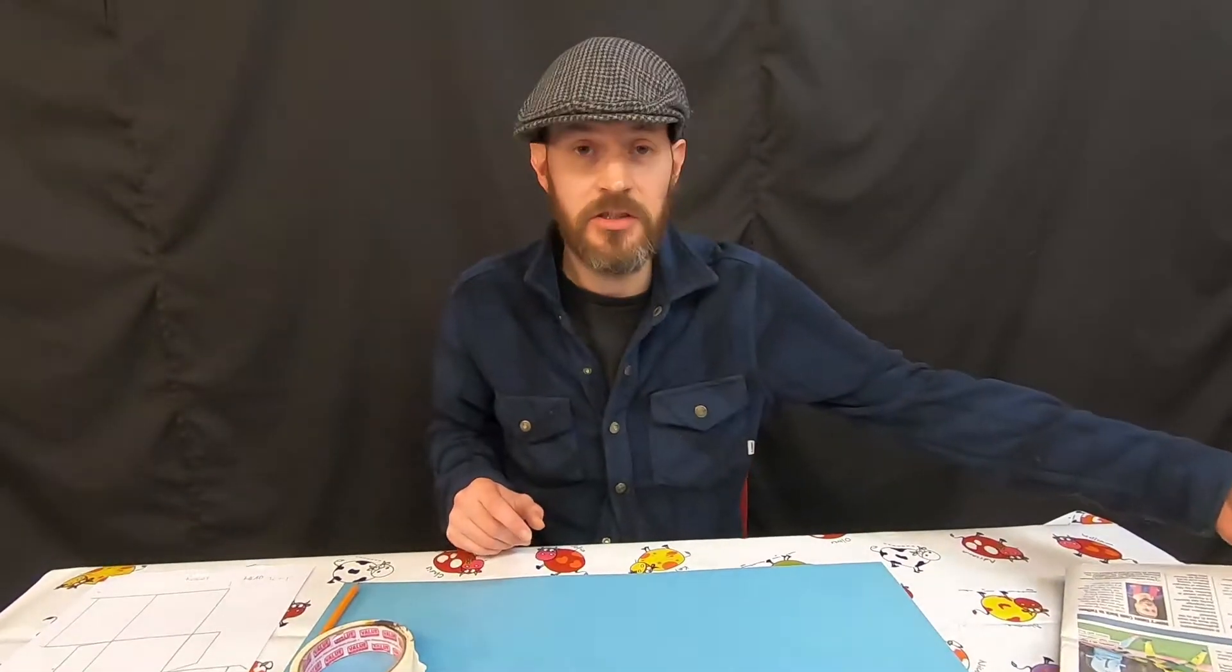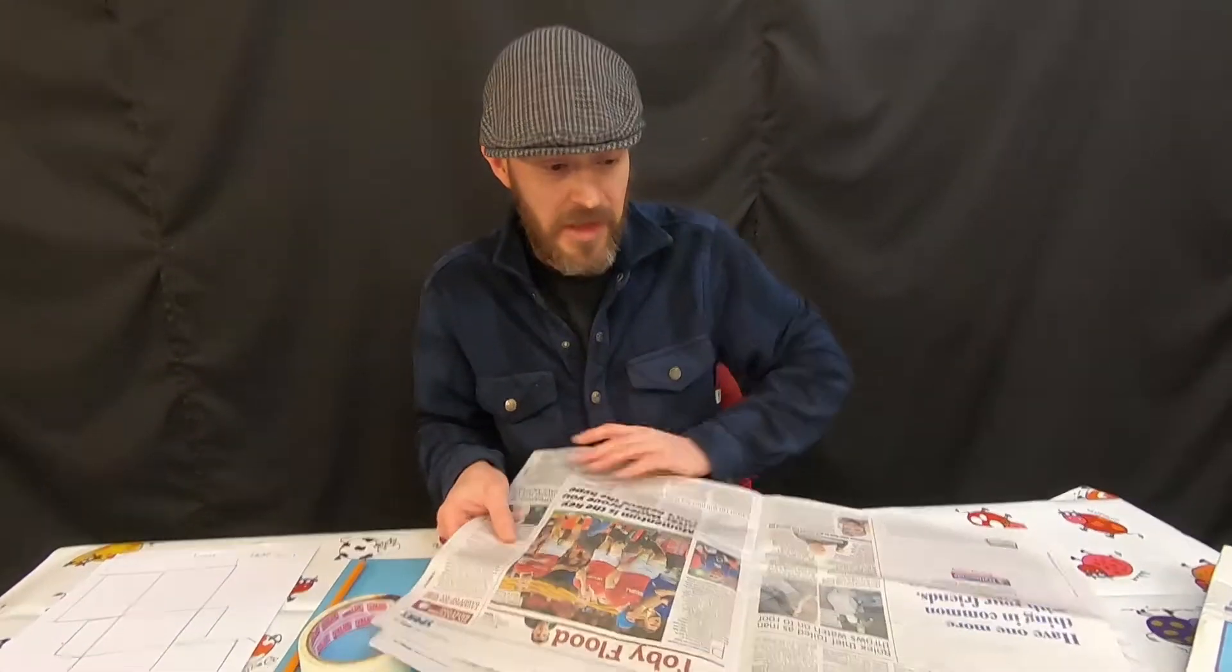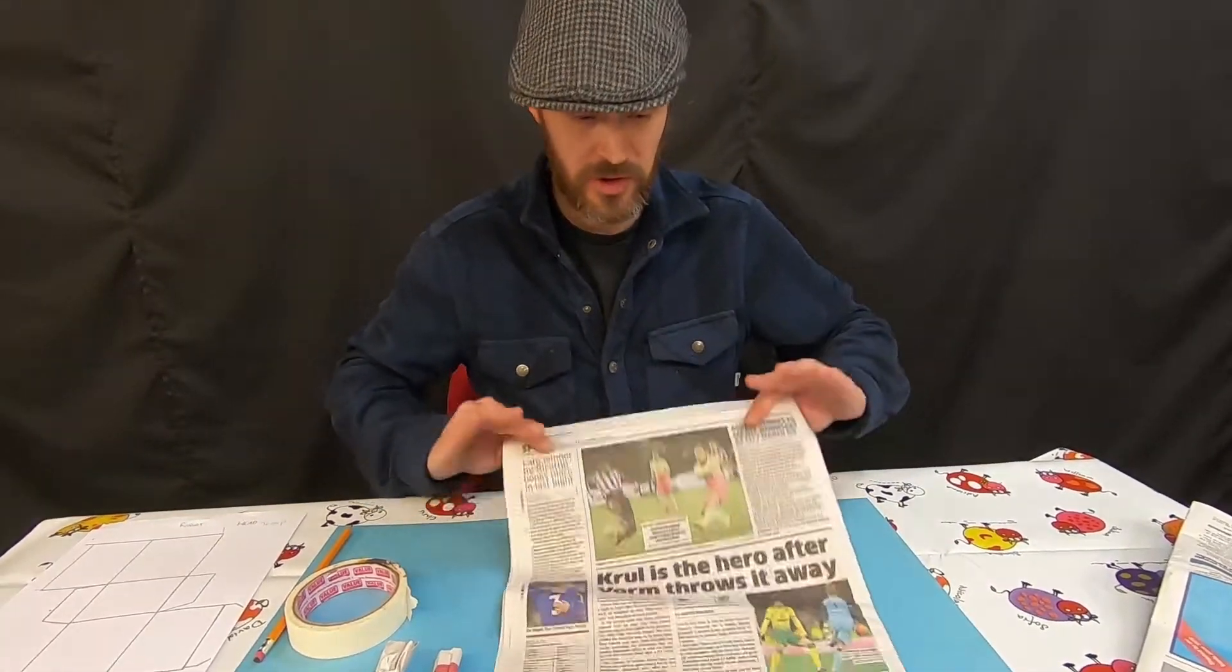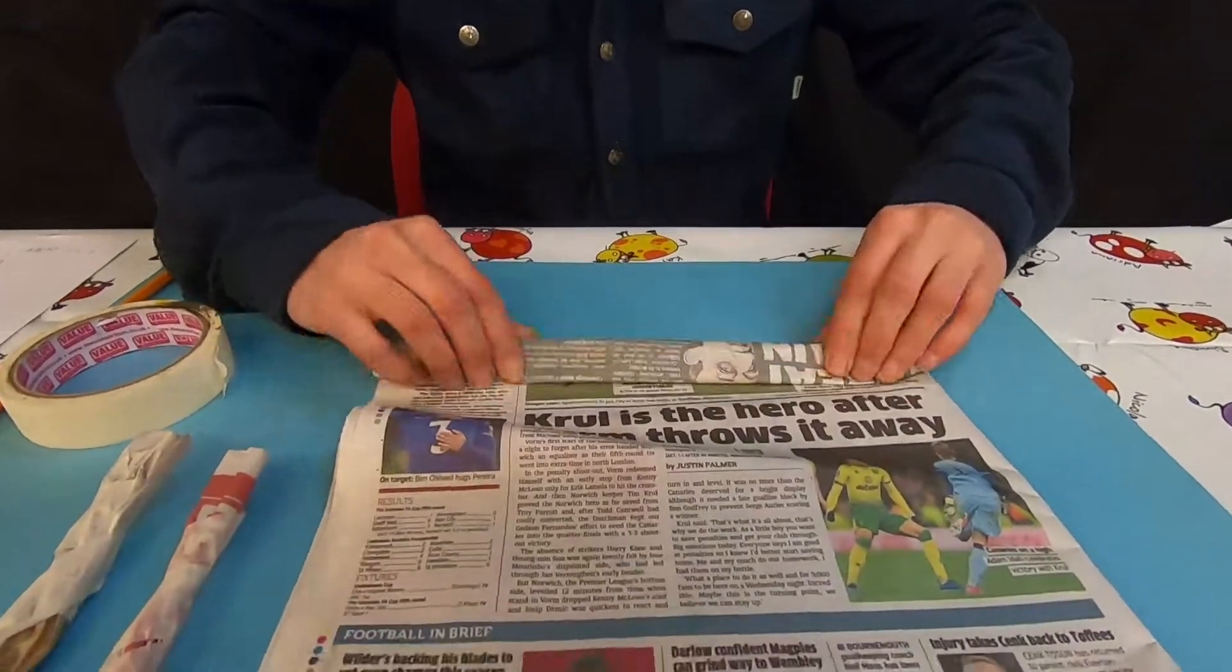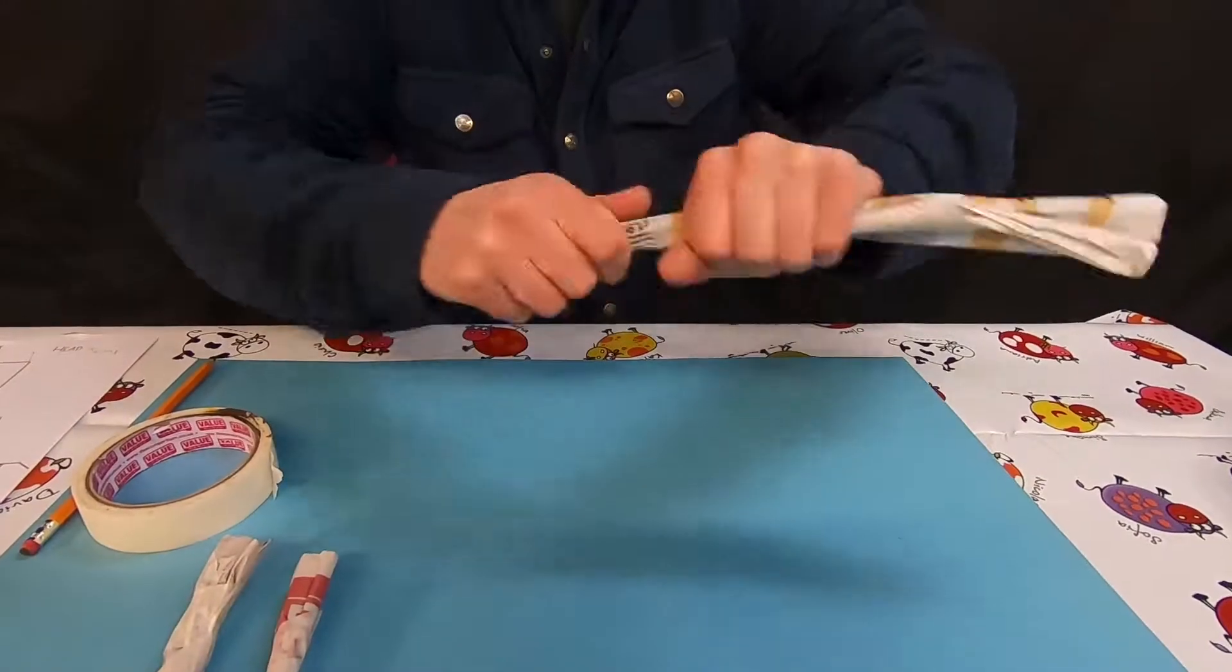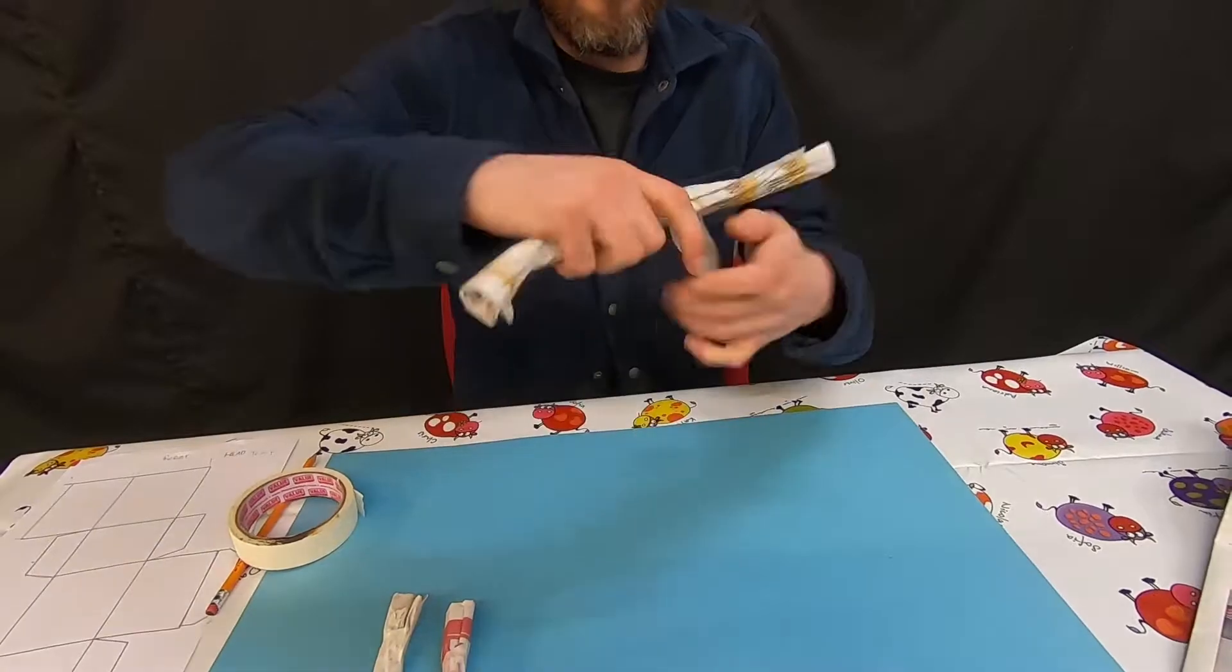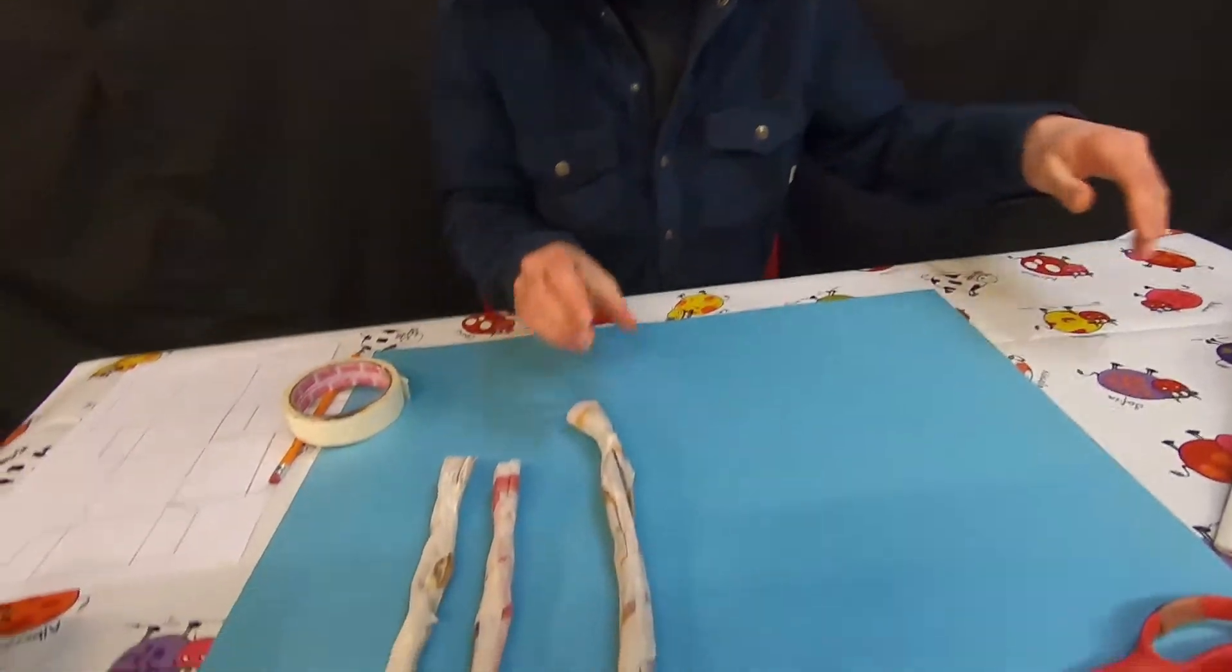For the legs I suggest using maybe two pieces of newspaper just to make it a bit thicker because these are going to have to hold the robot up. So two pieces of paper this time, folding it over like that. I just need to make one more leg.